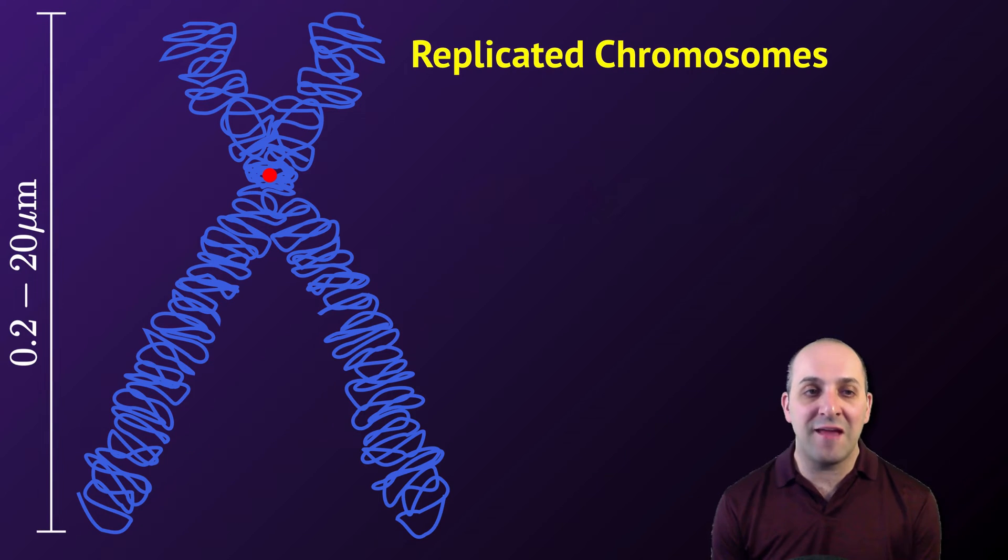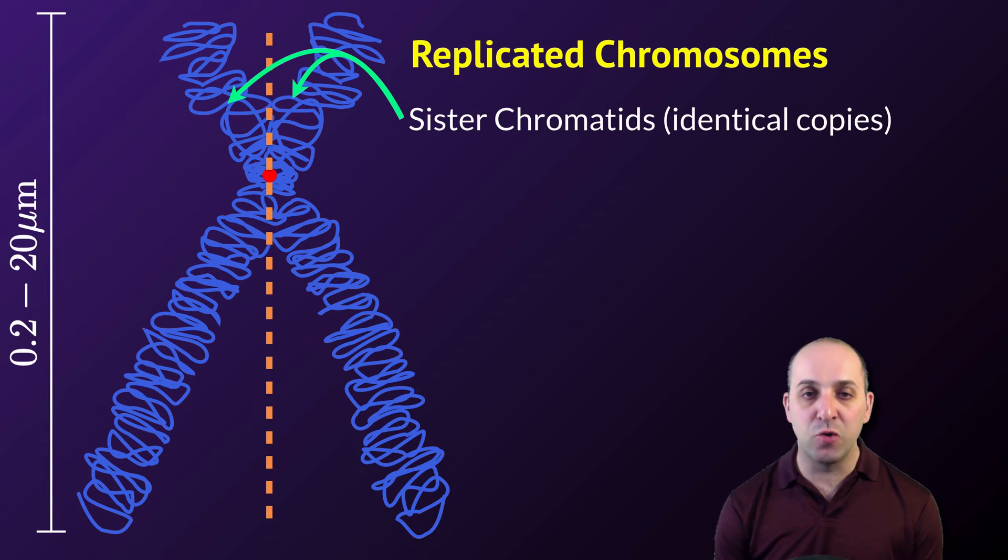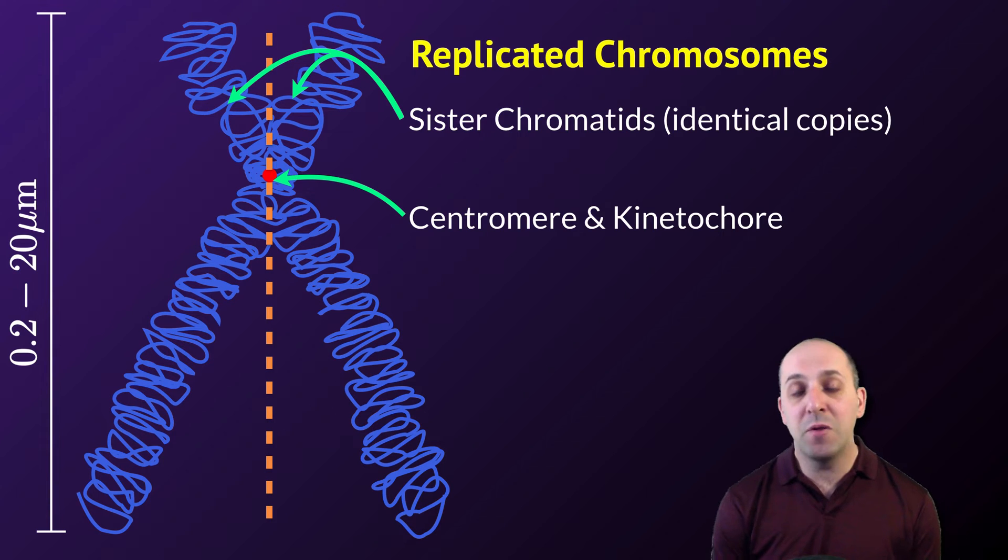It's also important to understand that this X structure is itself a replicated chromosome. It's actually two copies of the same chromosome, which are referred to as sister chromatids. These are identical copies of genetic information that are joined at a region of the chromosome known as the centromere. Below the centromere are a series of proteins known as the kinetochores, which are actually going to function in the movement of chromosomes during cell division.